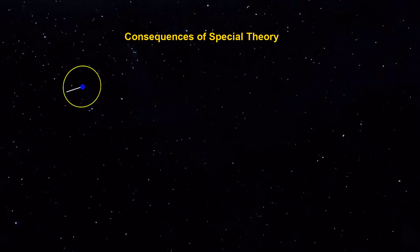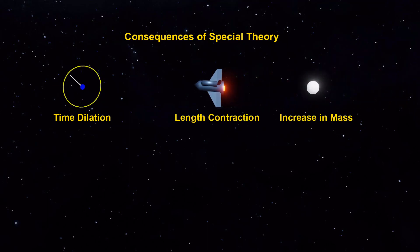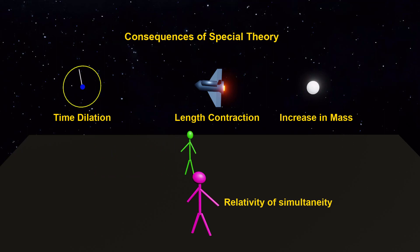The special theory has some intriguing and counterintuitive consequences, including time dilation, length contraction, increase in mass of a body, and the relativity of simultaneity.